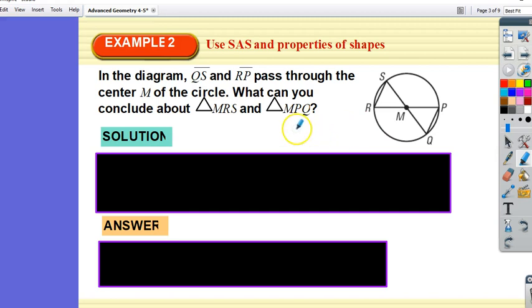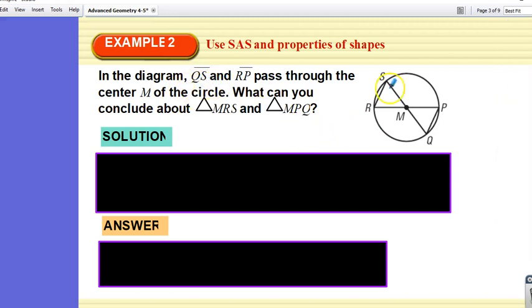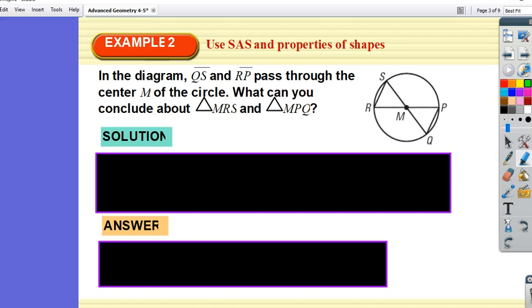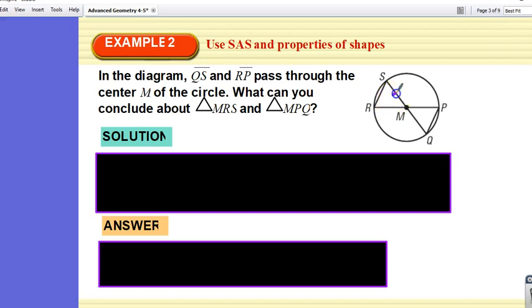In the diagram, segment QS and segment RP pass through the center M of the circle. What can you conclude about triangle MRS and triangle MPQ? Well, if they pass through the center, what do you know? You know that this and this are equal. Why? They're radii. Right? Doesn't the center bisect a diameter into two radii?